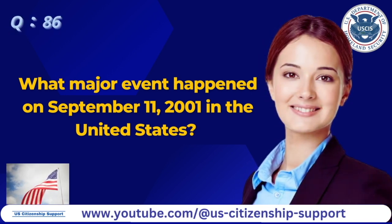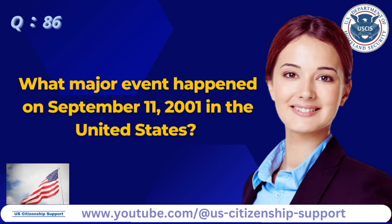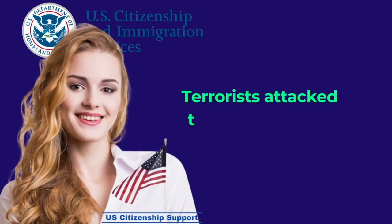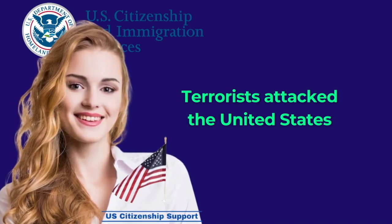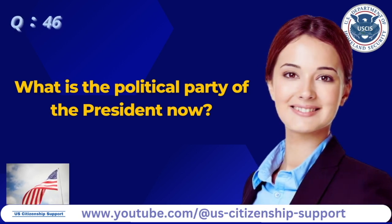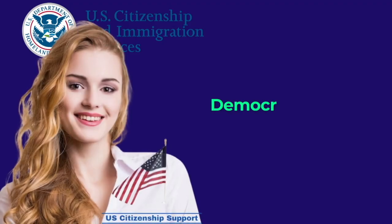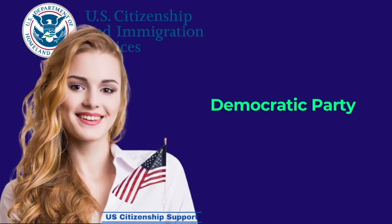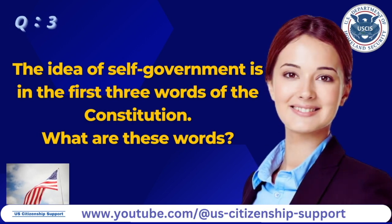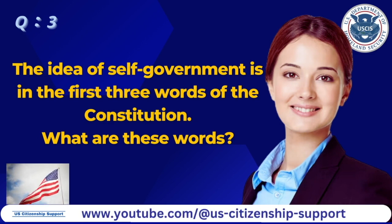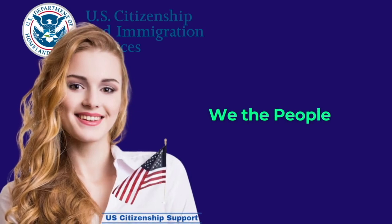What major event happened on September 11, 2001, in the United States? Terrorists attacked the United States. What is the political party of the president now? Democratic Party. The idea of self-government is in the first three words of the Constitution. What are these words? We the people.